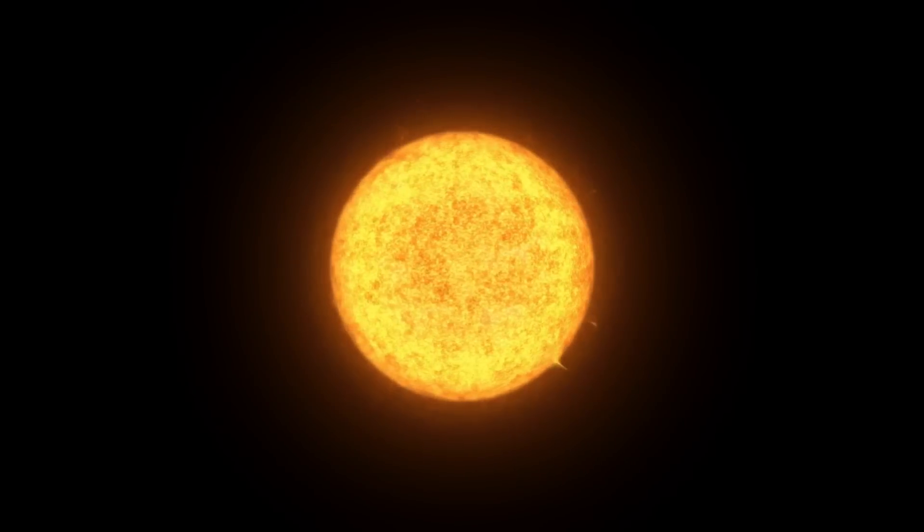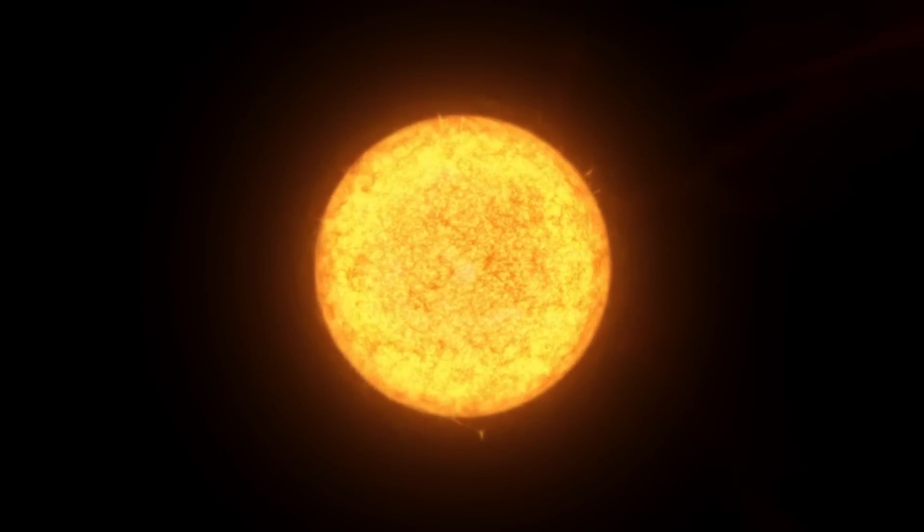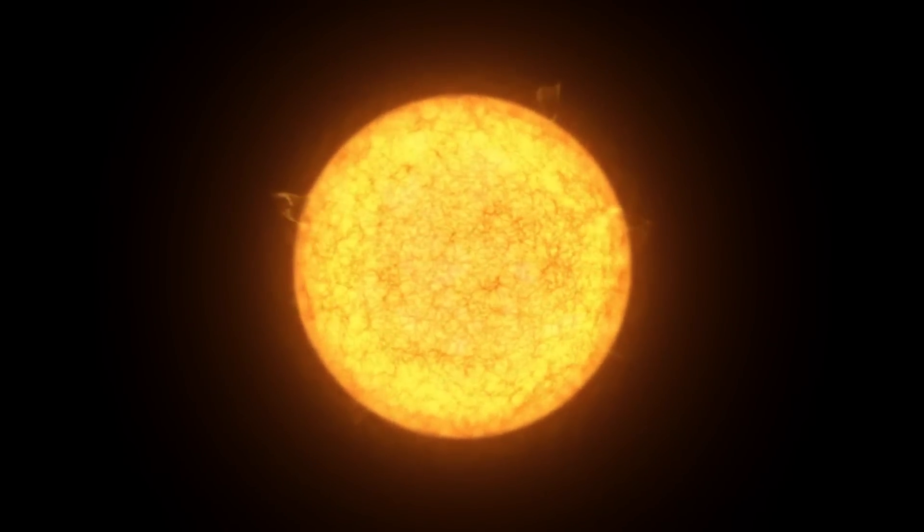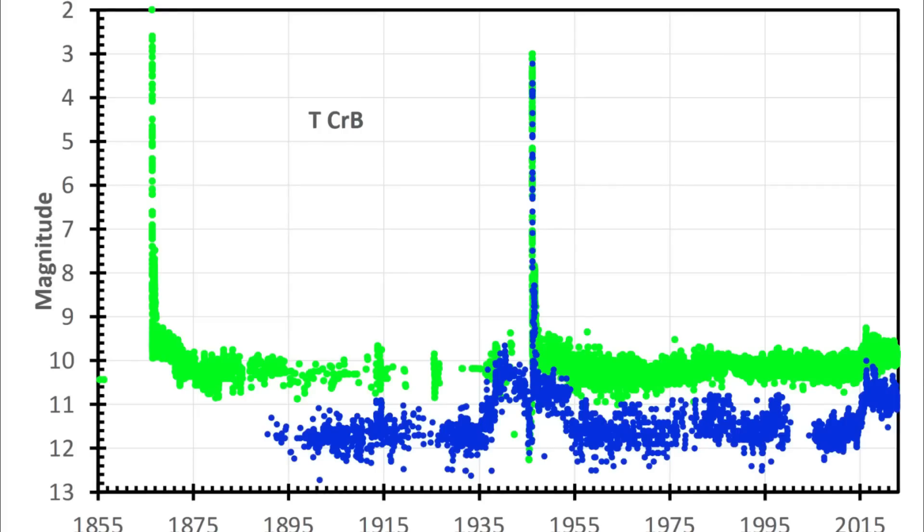Approximately a decade before each explosion, the star's brightness increased slightly, reaching what is known as a high state, followed by a brief dimming or dip about a year before the eruption.